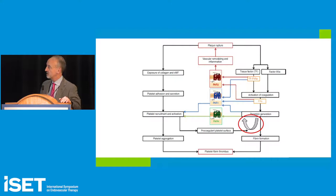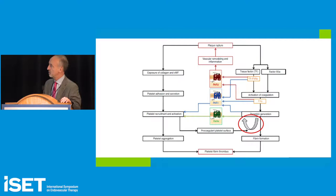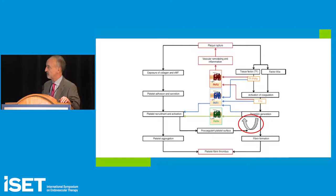Going down the platelet pathway: exposure of collagen and other factors leads to platelet adhesion, secretion, and activation — a platelet pathway independent of the thrombin pathway. On the other hand, tissue factor and factor XIIa are also exposed during plaque rupture, activating protease-activated receptors, which are platelet activators that recruit and activate more platelets. Once platelet activation begins, it feeds back into a procoagulant surface phenomenon generating thrombin — nothing begets thrombus more than thrombus, because it becomes a cyclical reentry pathway.